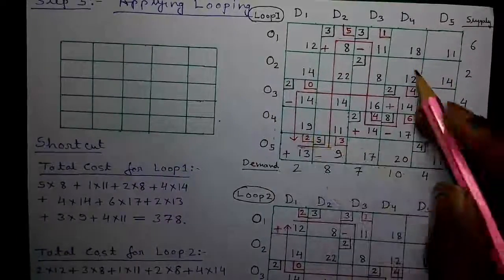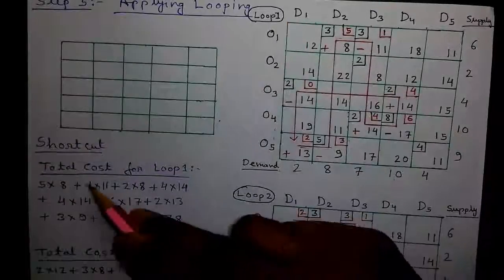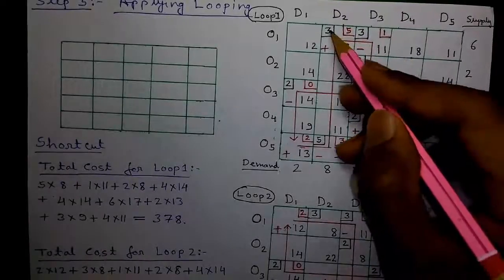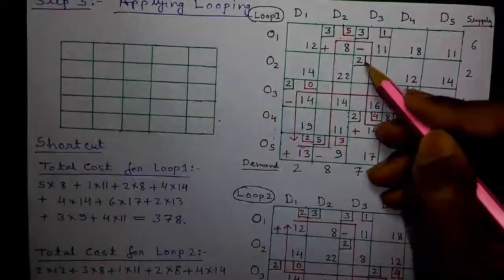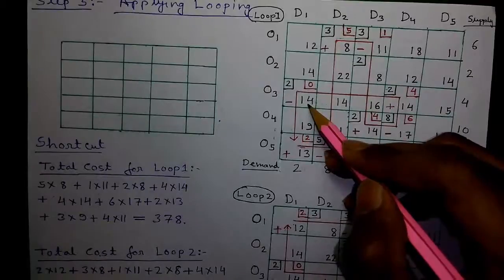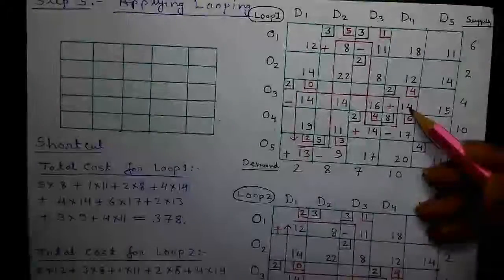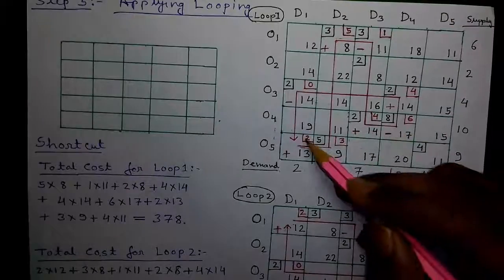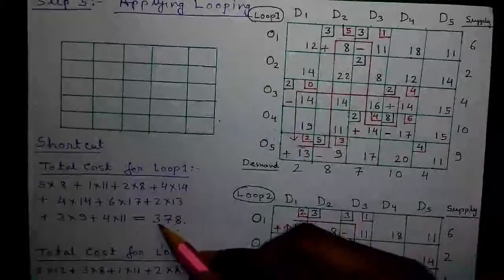For the shortcut, after drawing a loop consider the present allocation and calculate the total cost. This is our loop 1. The total cost for loop 1 is given by the new allocation multiplied by the cell value. Remember, previous allocation values will not be considered — new allocation values are given in red. So: 5×8 plus 1×11 plus 2×8, which remains unchanged, plus 0×14 which is 0 and can be neglected, plus 4×14 plus 4×14 plus 6×17 plus 2×13, plus 3×9 plus 4×11. That equals 378.